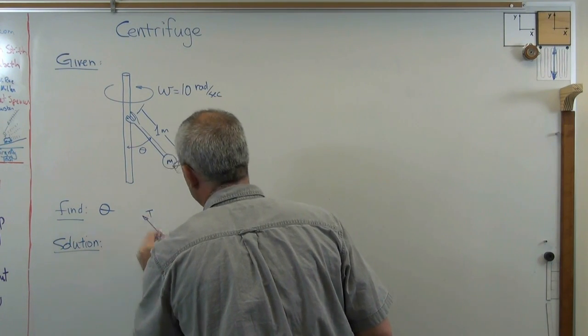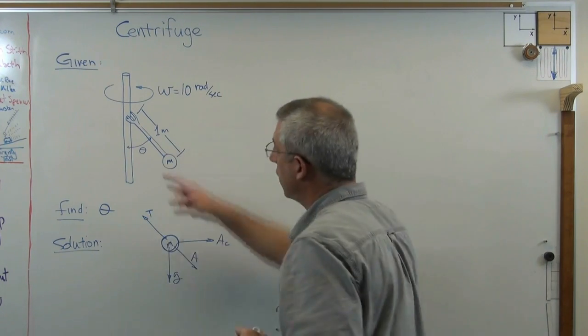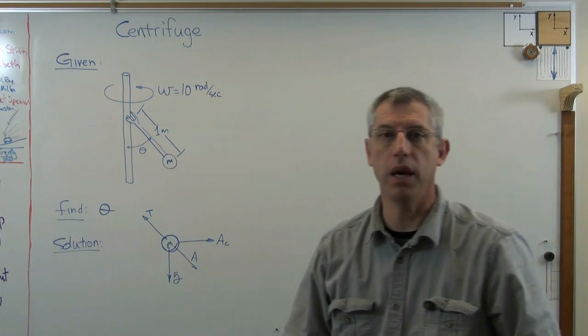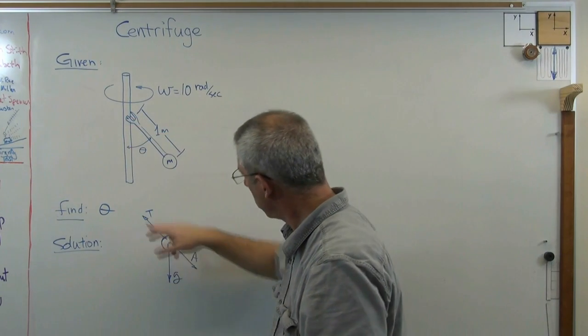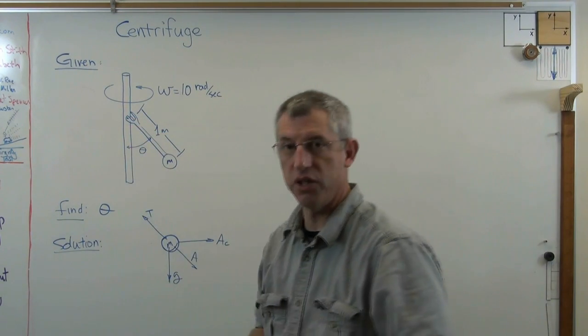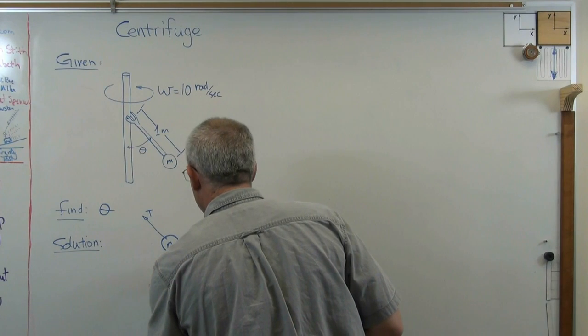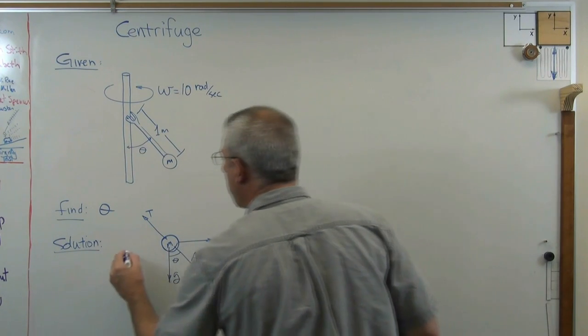And the resulting acceleration goes down this way. And the resulting tension goes that way, right? Because this is pinned. Remember, there can't be any moment at that joint there. So, the acceleration vector and the tension are going to line up with each other. So, that right there is theta. So, there's step one.